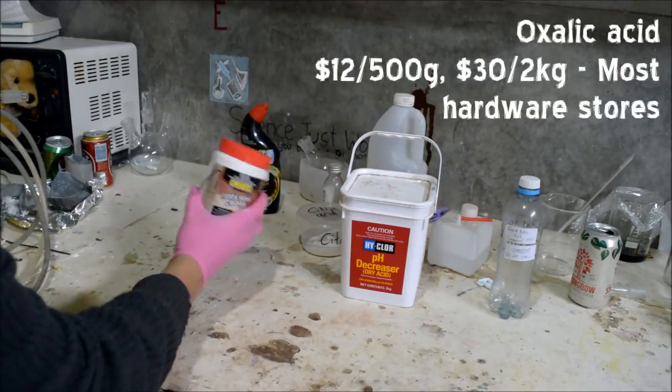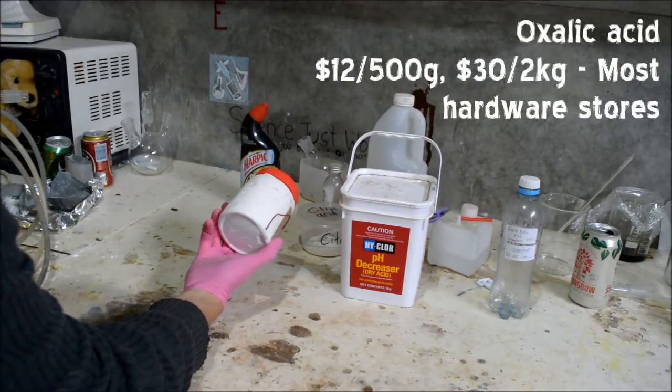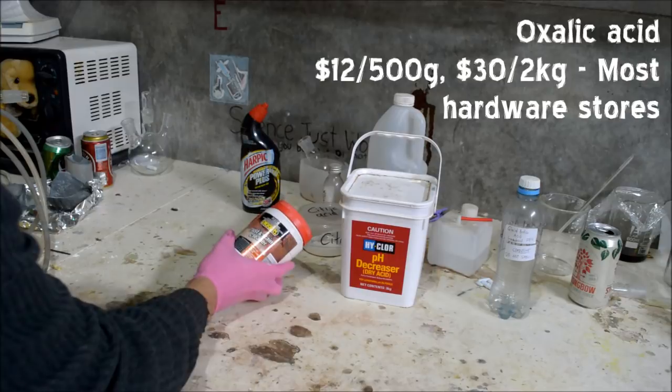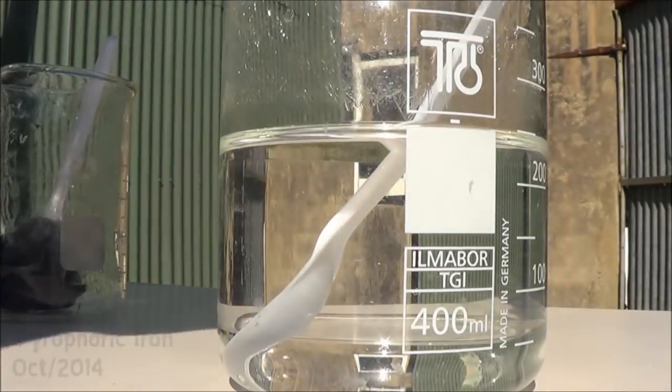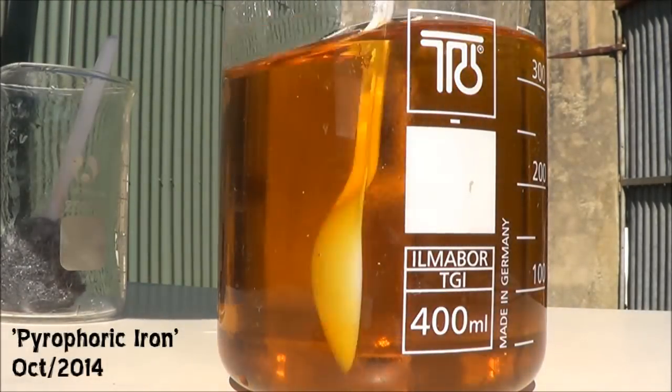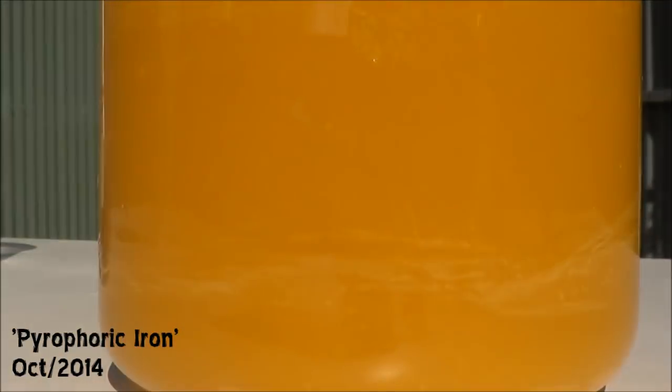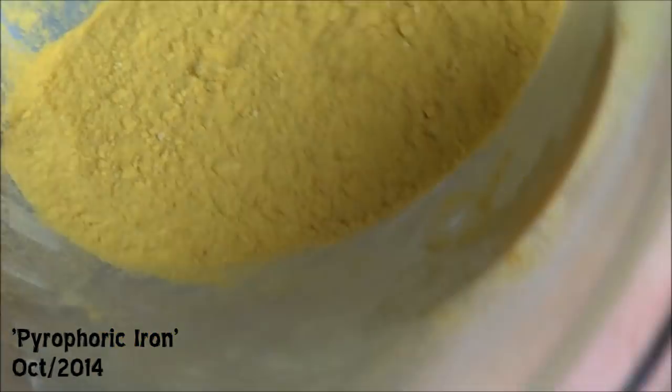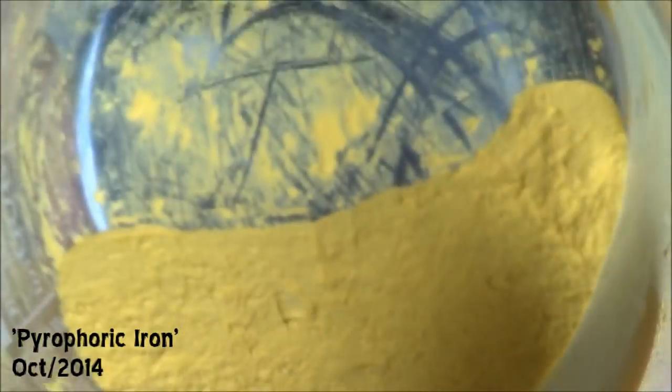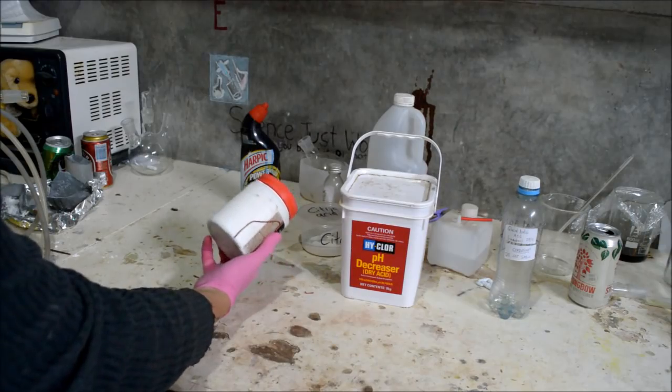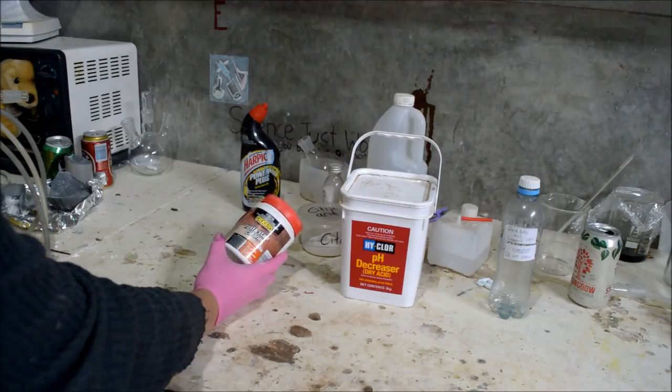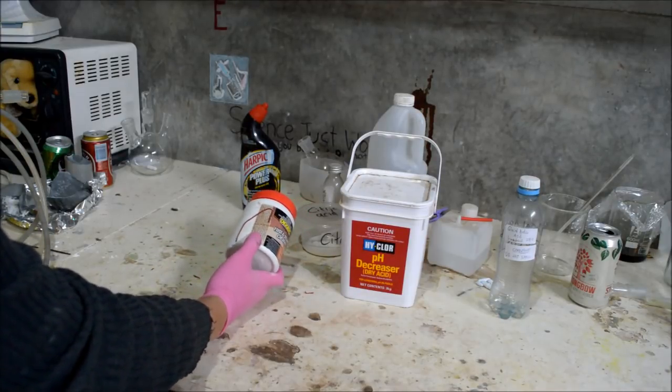This here is oxalic acid. It's used as a rust remover from tiles and stuff. I bought it a couple years ago. The only use I've had for it so far is iron oxalate—I made a video on that a while back—but it is actually more a common and somewhat useful chemical in chemistry situations. It does find a bit of use in some stuff, so it's not that expensive, so it's actually a pretty good buy.